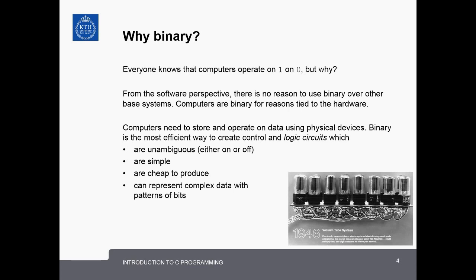It's common knowledge that computers operate on the binary or base 2 number system, but why is that? From a software perspective, there's no particular reason why binary should be used over other base systems. Computers are built using the binary system for reasons tied to practical hardware issues. First, computers need to store and operate on data using physical devices, and electric circuits, specifically digital logic circuits, are an inexpensive and reliable way to do this. Using binary, it's easier to create control and logic circuits which are unambiguous. For example, using transistors, you can very easily determine whether the circuit is on or off, which can correspond to 1 or 0. They're simple to produce, they're cheap, and they can represent complex data with patterns of bits.